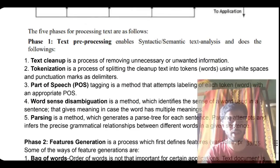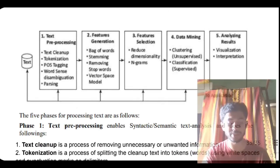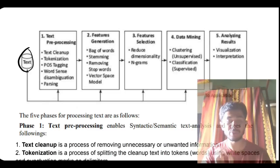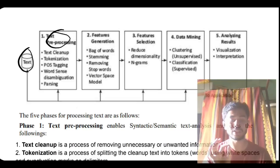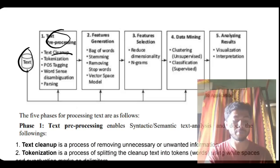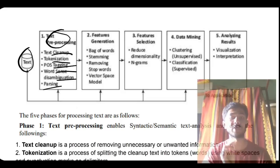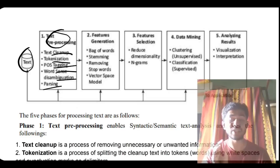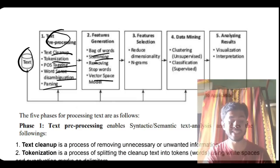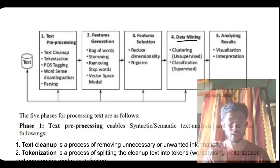If asked about the text mining process, it is very important to draw the diagram first, then explain. The five steps are: (1) start with raw text data; (2) text pre-processing — text cleanup, tokenization, tagging, word sense disambiguation, and parsing to remove redundant or irrelevant information; (3) feature generation — bag of words, stemming, removing stop words, vector space model; (4) feature selection — dimensionality reduction and n-grams method.